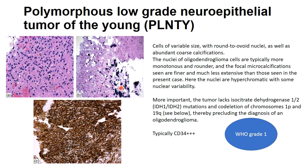The calcification in oligodendroglioma is focal with much finer microcalcifications compared to the coarse calcifications in PLNTY. Additionally, oligodendroglioma characteristically harbors 1p19q codeletion and IDH1 or IDH2 mutation. PLNTY, being a LIAT, does not harbor any IDH mutation or 1p19q codeletion. Rather, it shows characteristic strong and diffuse CD34 positivity.